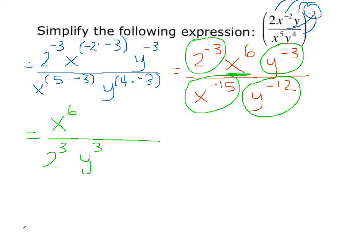Now in the denominator, we have x to the negative 15th power, so taking the reciprocal of that, that term moves to the numerator and the exponent becomes positive. And finally, the y to the negative 12th power — again, we take the reciprocal and move it to the numerator and make the exponent positive.